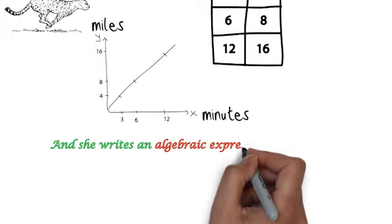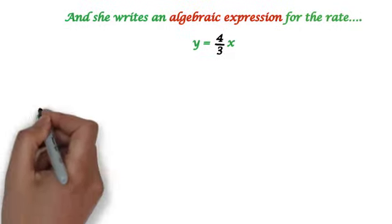And now she can write an algebraic expression for the rate, y equals four-thirds x.